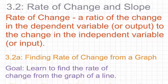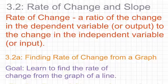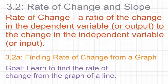For our first lesson, we're going to look at finding rate of change from a graph. Our goal from this lesson is to learn to find the rate of change from the graph of a line. Now there are some steps that we can take — write these steps down — to help us think through the process we have to follow in order to identify the value for the slope.